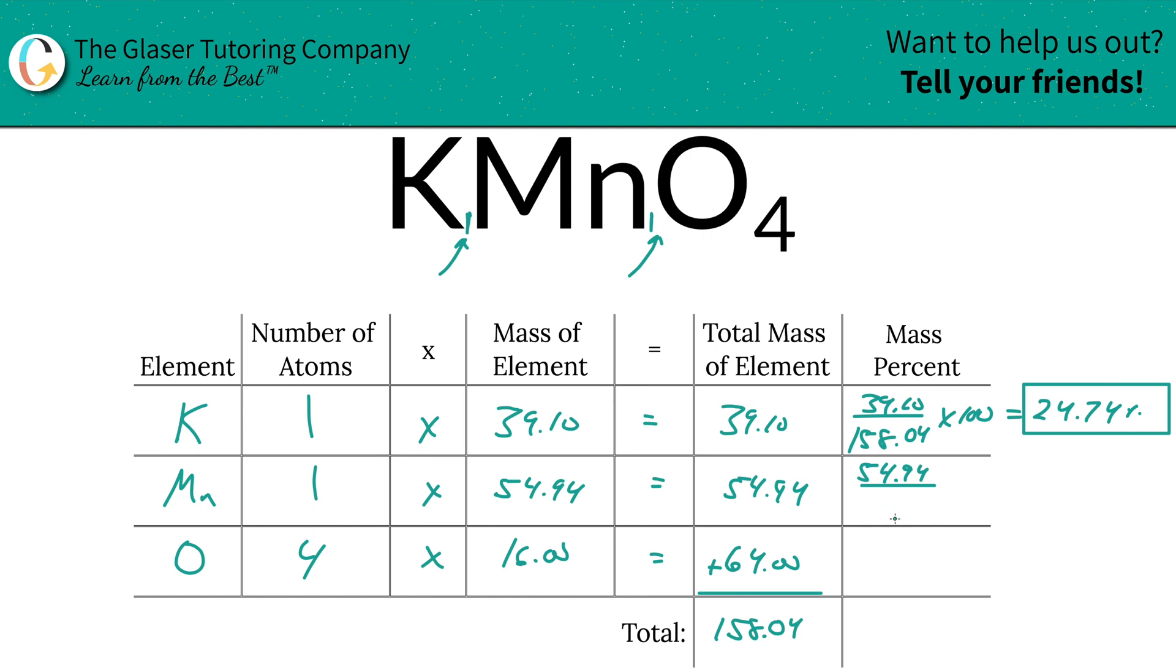54.94 and then divide it by the total mass of the compound, 158.04, times that by 100, and we find the total percent here is going to be 34.76%.